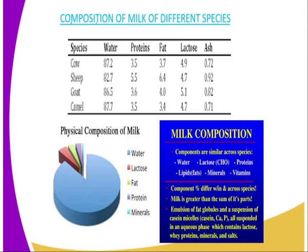For example, potassium is found in milk. Looking at the pie chart, you can see that water represents the largest portion of the components of milk, followed by protein, then fat, then lactose, and finally ash or minerals.